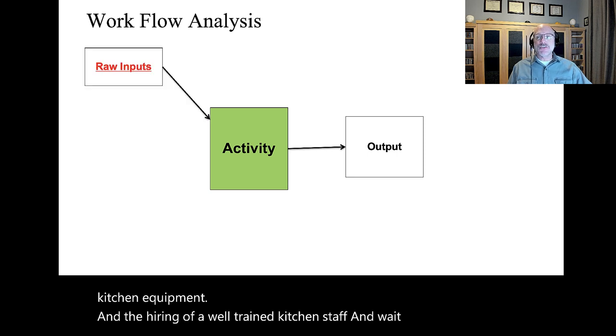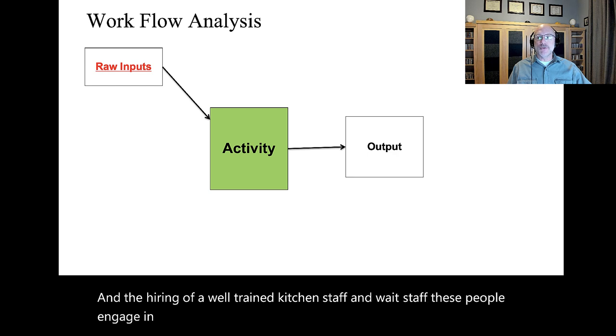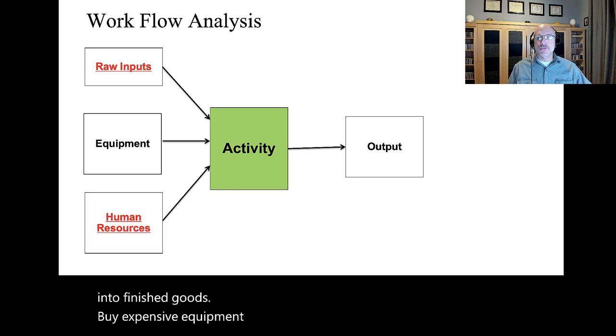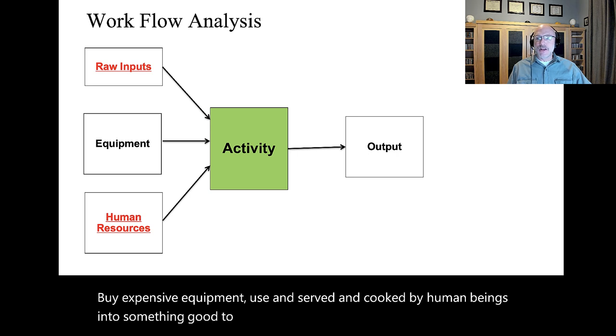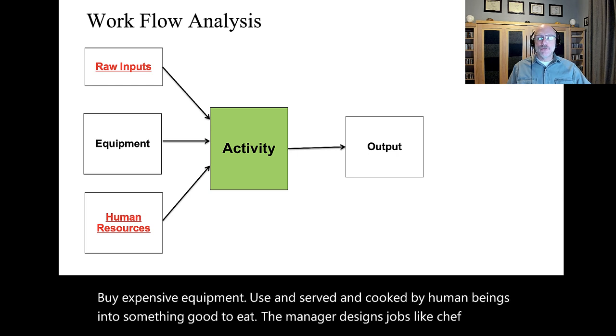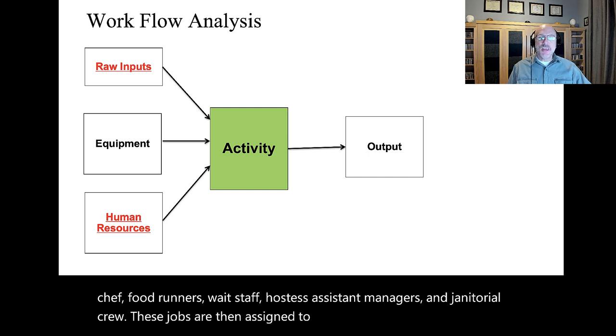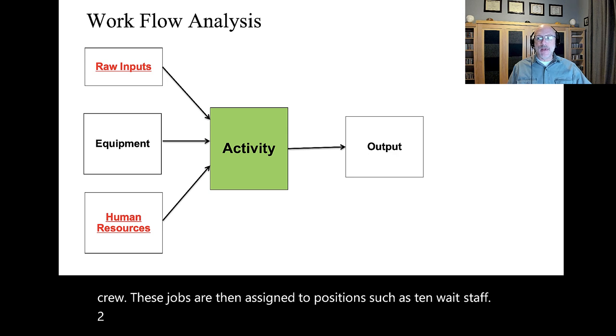This requires the use of fairly expensive kitchen equipment and the hiring of well-trained kitchen staff and waitstaff. These people engage in activities designed to take raw materials and transform them into finished goods. The manager designs jobs like chef, assistant chef, food runners, waitstaff, hostess, assistant managers, and janitorial crew. These jobs are then assigned to positions such as 10 waitstaff, 2 hostesses, 3 assistant managers, etc.